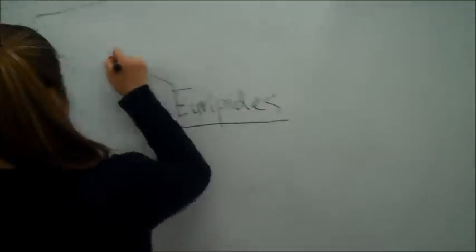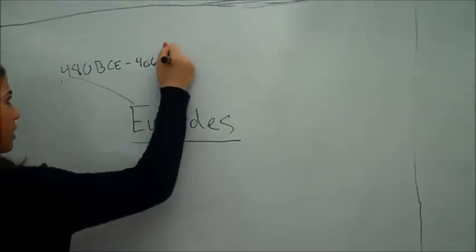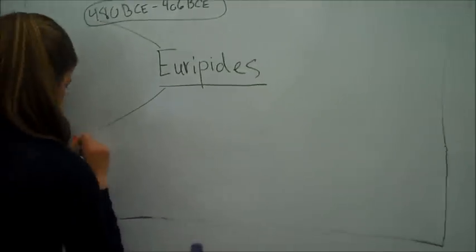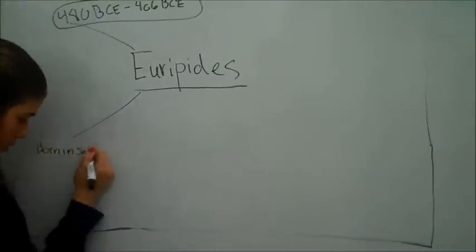Euripides. Euripides was born in 480 B.C.E. and died in 406 B.C.E. He was born in Salamis, Greece.